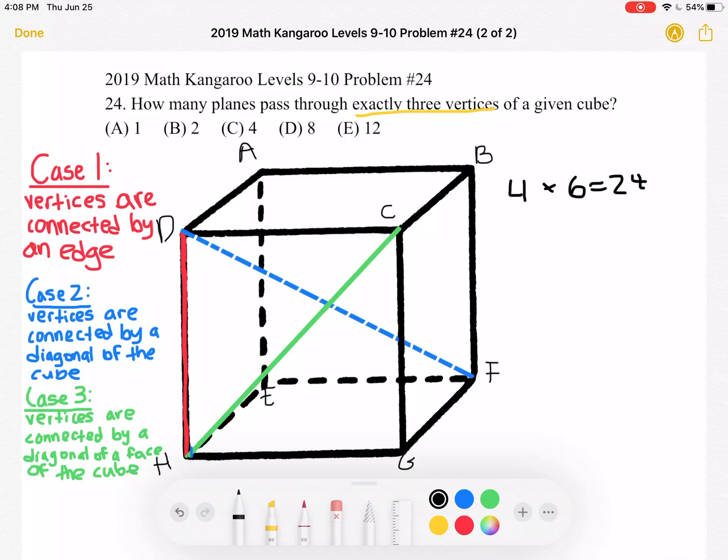So earlier I used the example h, c, a and that was when we chose the face d, c, g, h to be the face where we had our first two points chosen.